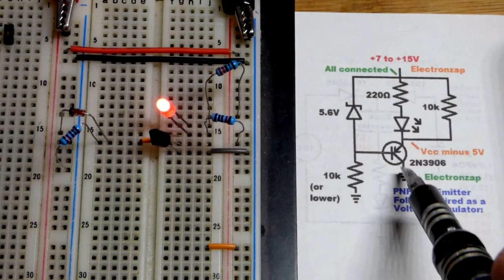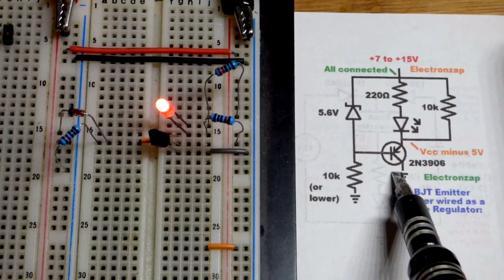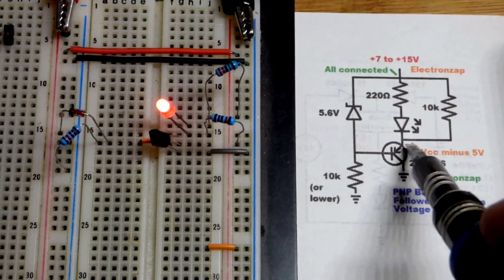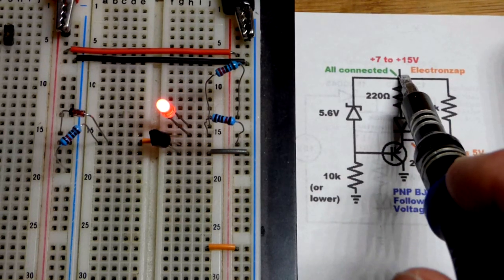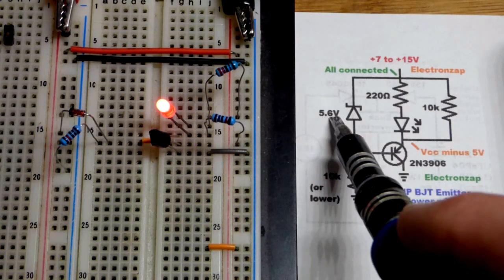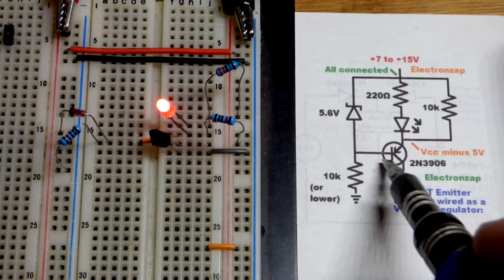In this video we're going to look at how we can use a PNP bipolar junction transistor to fix a voltage across the load, basically a regulator. We want 5 volts and since we're using a PNP bipolar junction transistor we can just set that voltage with a Zener diode.